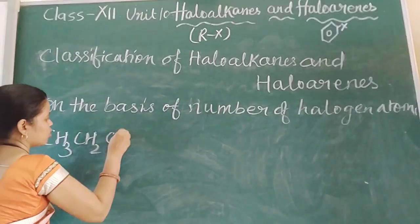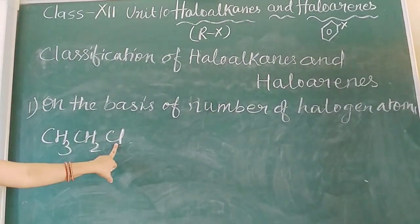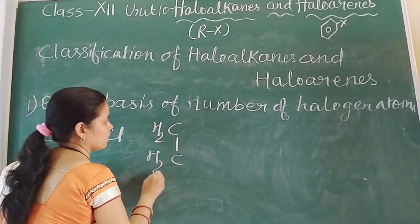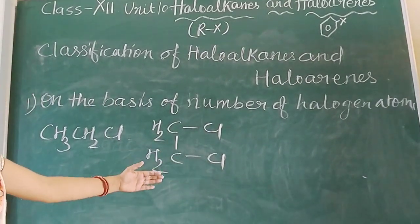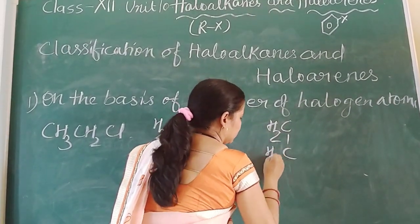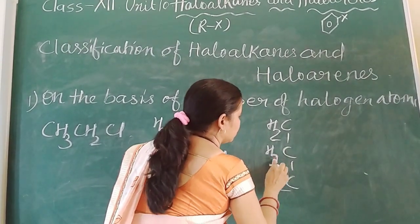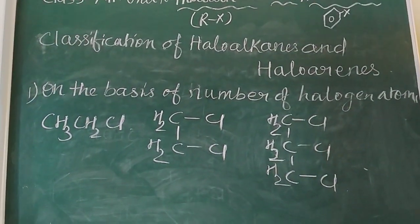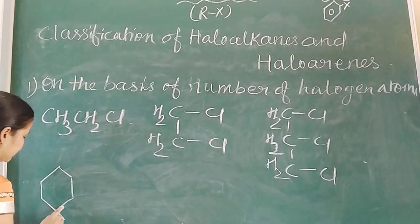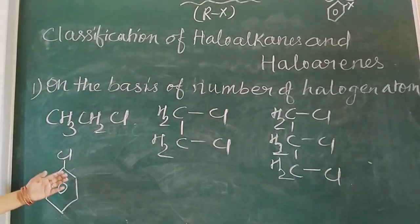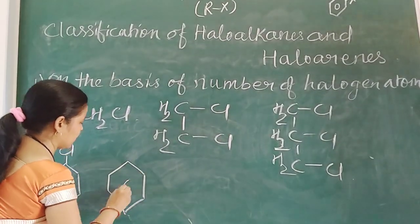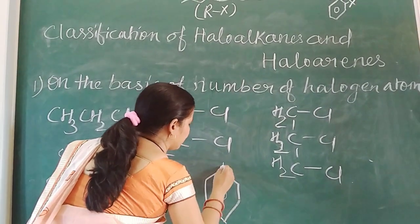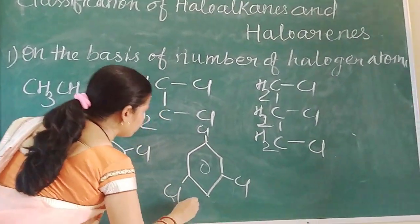This is CH3-CH2-Cl, chloroethane — only one halogen atom is present, so this is mono-haloalkane. If two Cl atoms are present, it is di-haloalkane. Three halogen atoms attached — it is tri-haloalkane. Similarly in haloarenes: only one Cl present is mono-haloarene, two Cl is di-haloarene, three halogen atoms present is tri-haloarene.